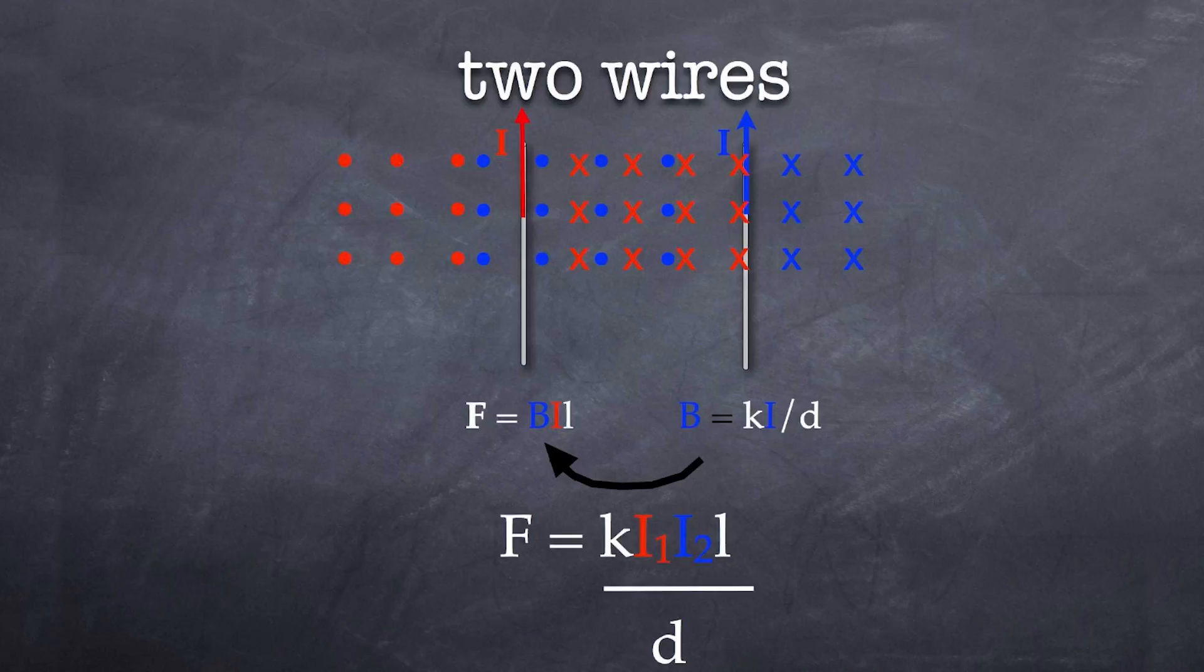Now sometimes this is also written as F over L is equal to kI1I2 over d. Why is that? Well, when you've got high voltage power lines, the force obviously the bit is determined between the two power lines that are running side by side, and the force obviously is dependent on how long the wire is. So we're often referring to the force as the force per unit length. So we work out the force per meter to give you this particular value. So there you have it, there's the force between two current bearing wires.